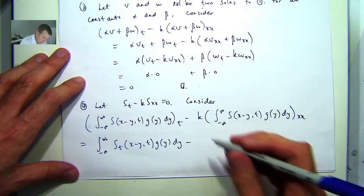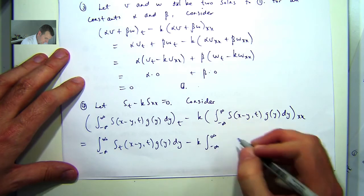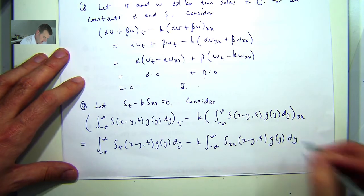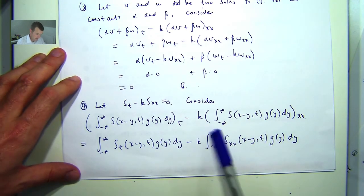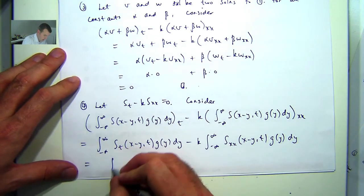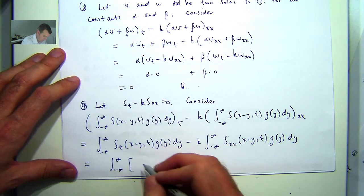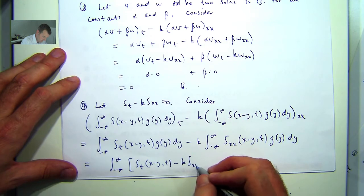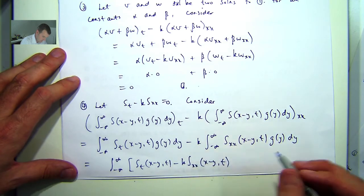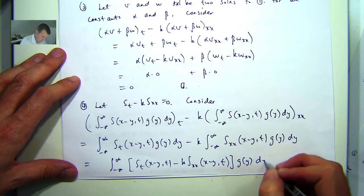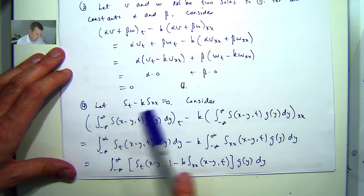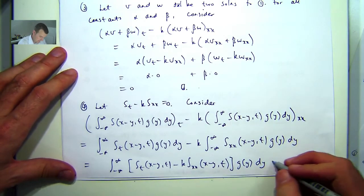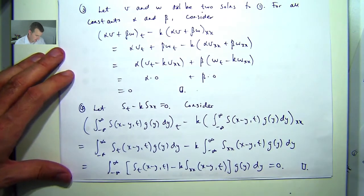And I can move these inside here. Now I may be slightly abusing the notation here. And then, for example, if the k goes in as well, you can form 1 integral. Now this is 0 because of this and the translate property 1. So that's going to solve 0.4.